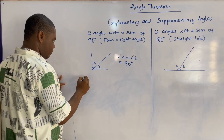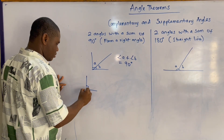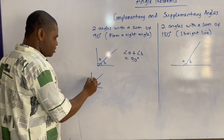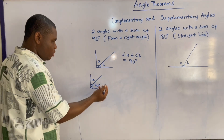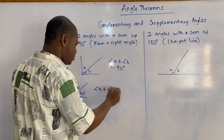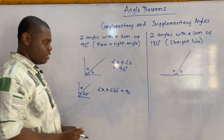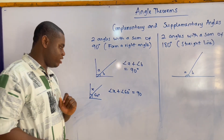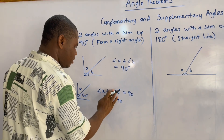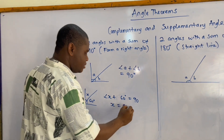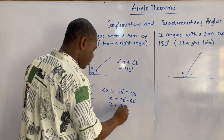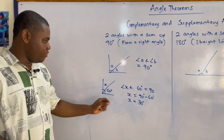For our first example, we have 60 degrees and we are being asked to find x. We know that angle x plus 60 degrees equals 90 degrees, so x and 60 degrees are complementary angles. Therefore, x equals 90 minus 60 degrees, which gives us 30 degrees.